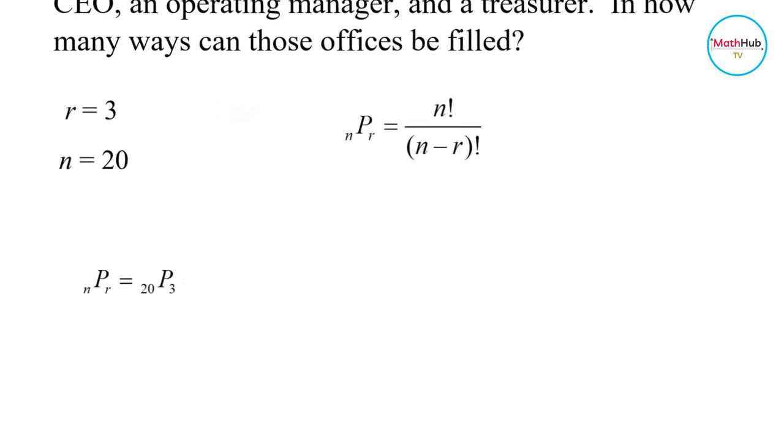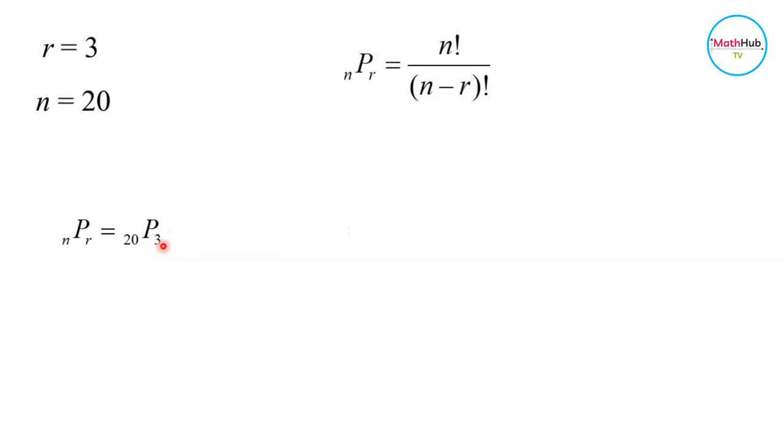Using the formula for permutation, we have 20 permutation taken 3. 20 factorial divided by 20 minus 3 factorial, which is equal to 17 factorial. To compute this, we will express 20 factorial as 20 times 19 times 18 times 17 factorial.